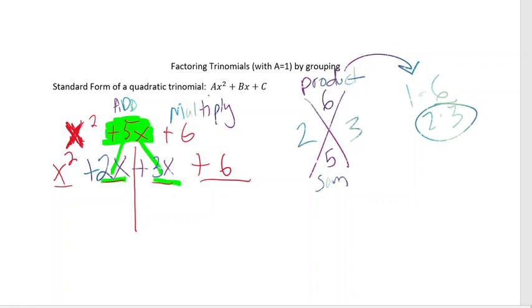We came up with what two numbers add to give me 5 and multiply to give me 6. And it'll always be that pattern where they add to give me b and they multiply to give me c from that standard form of a quadratic trinomial. Now that we have divided it up into four terms,